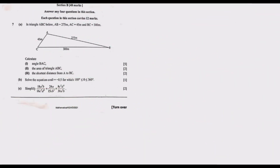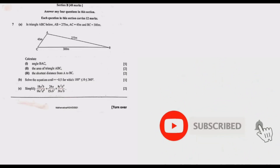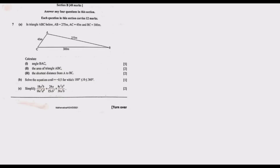Dear viewers, welcome to today's episode, which is the seventh episode in our series of 12 where we are looking at all 12 questions in the 2021 GCE Mathematics Paper 2. Question 7 reads: In triangle ABC, AB equals 275 meters, AC equals 45 meters, BC equals 300 meters. Calculate angle BAC.